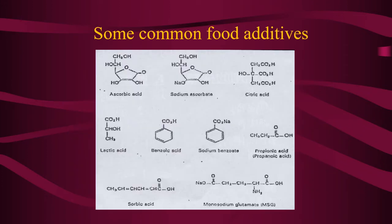These are some common food additives used in the food industry. The first is ascorbic acid, which is Vitamin C. However, ascorbic acid is not very stable, so we can use the sodium ascorbate form, which is more stable. We also have citric acid, used as a pH regulator, lactic acid, benzoic acid, sodium benzoate, and propionic acid, which also serves as an acid regulator in food.